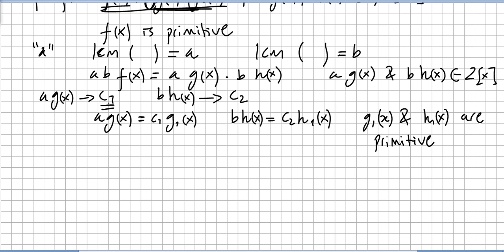Now we define c1 as the content of a·g(x), and c2 as the content of b·h(x). So a·g(x) equals c1·g1(x), and b·h(x) equals c2·h1(x). Both g1(x) and h1(x) are primitive polynomials.